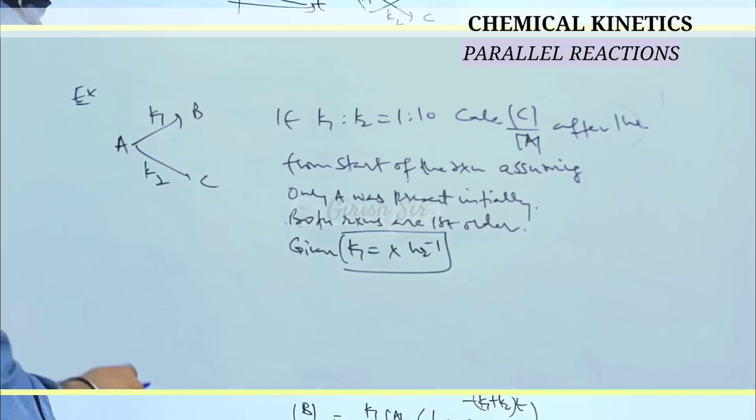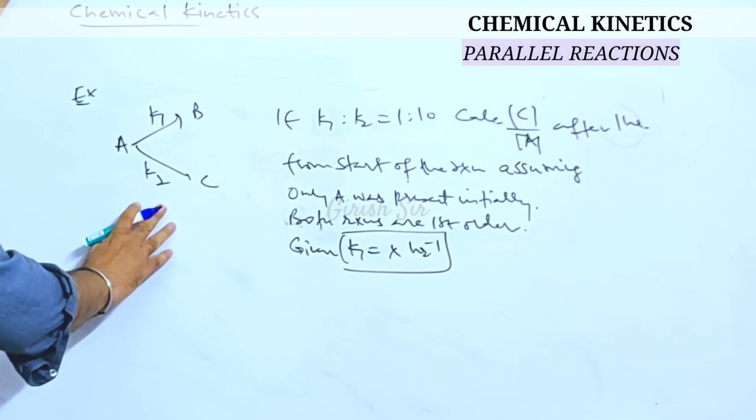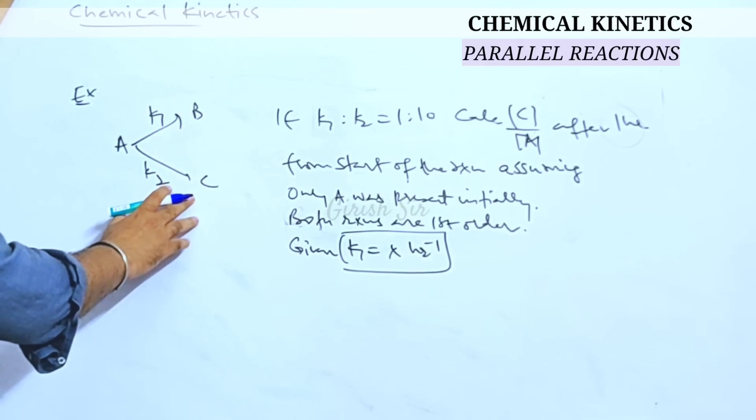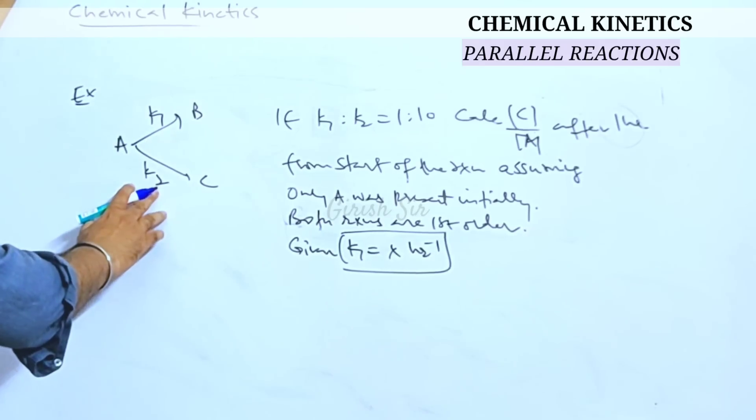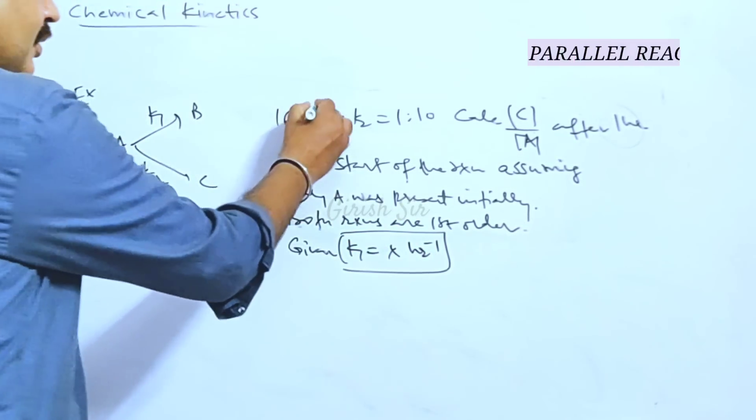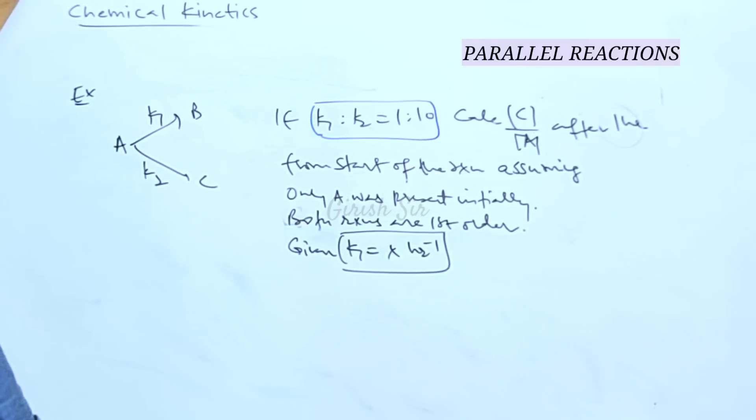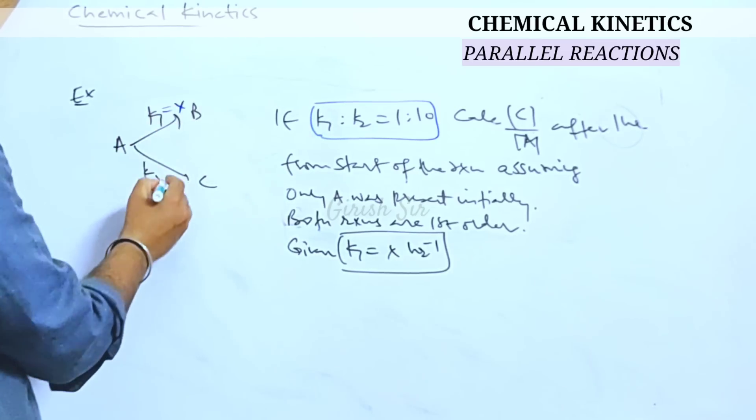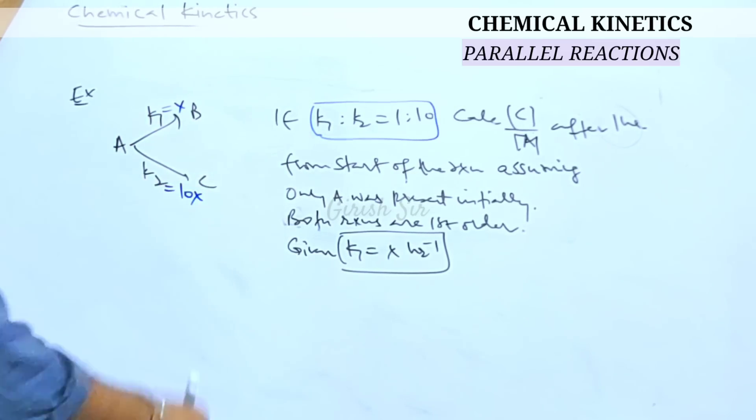Let's look at the equation. Let's see this example based on parallel reaction, two parallel reactions are specified, given K1 and K2 being the rate constants and it says both reactions are first order. The ratio of rate constants is specified and K1 is given as x. If K1 is given as x, K2 can be taken as 10x.